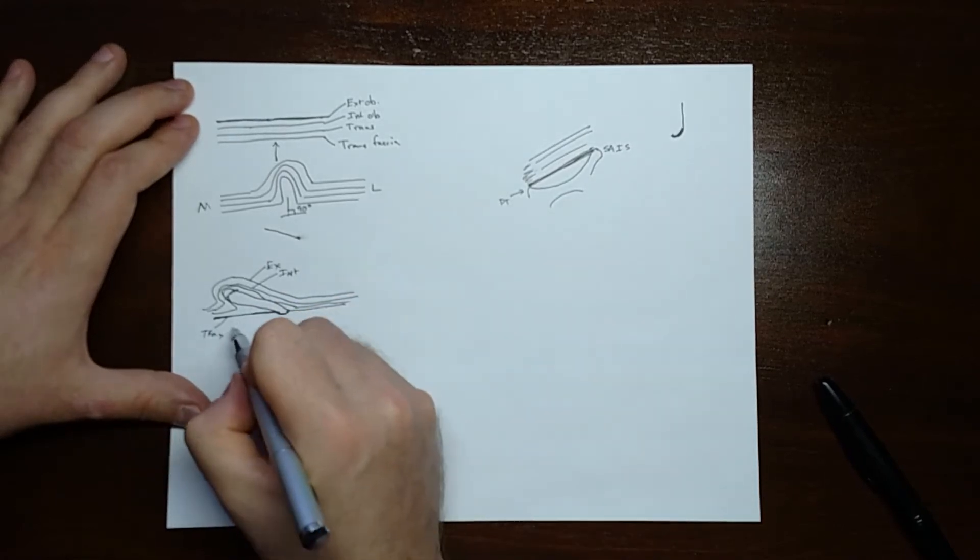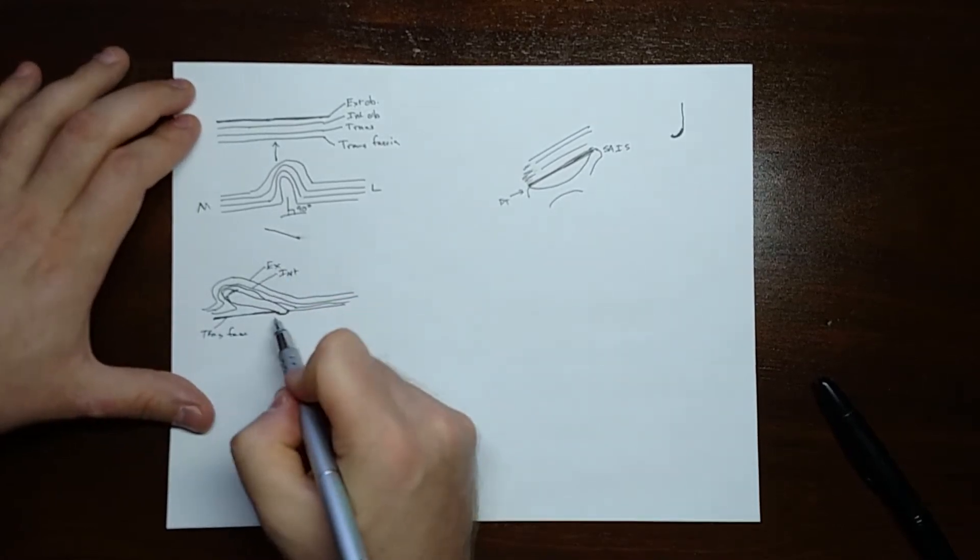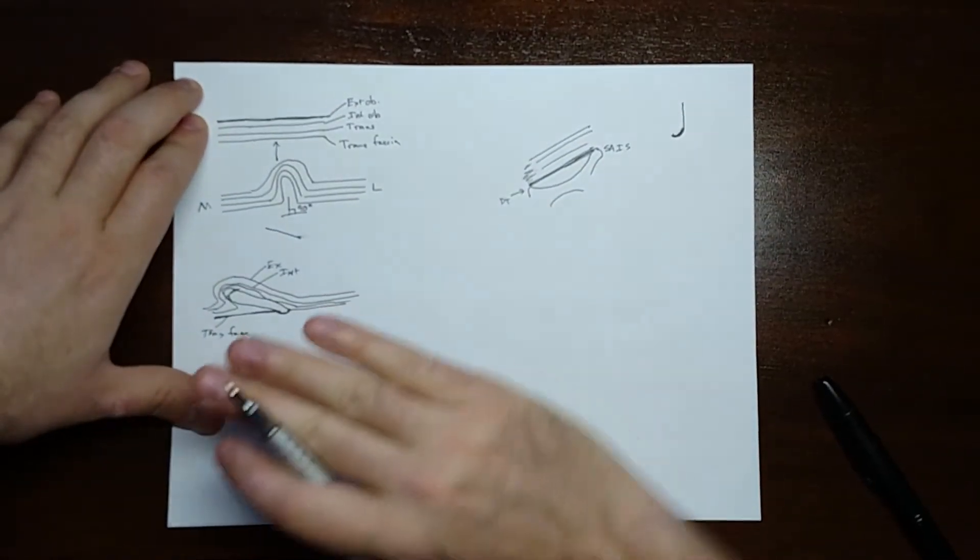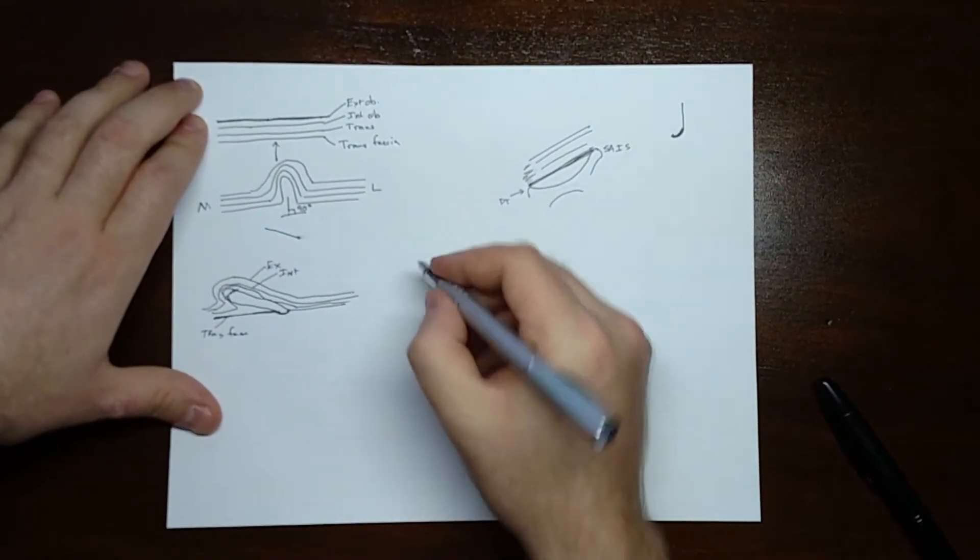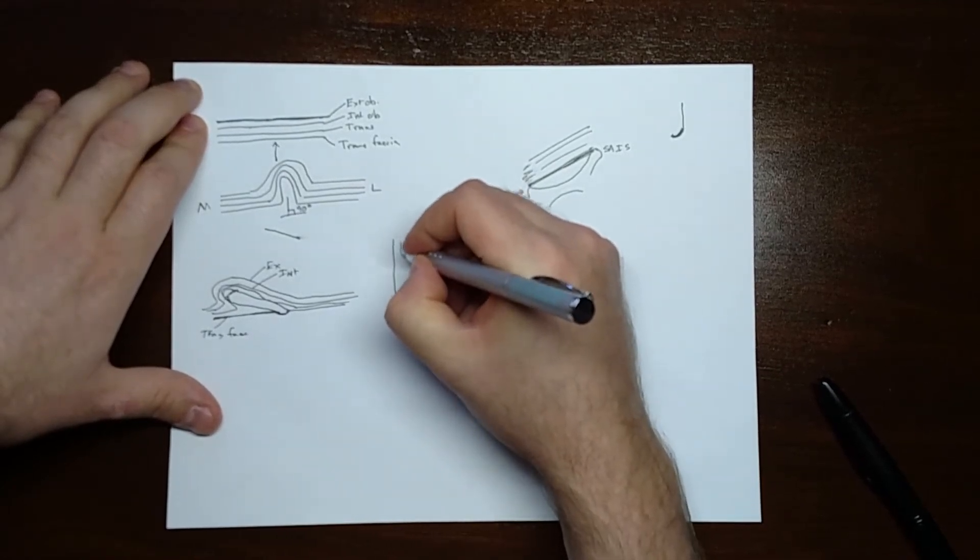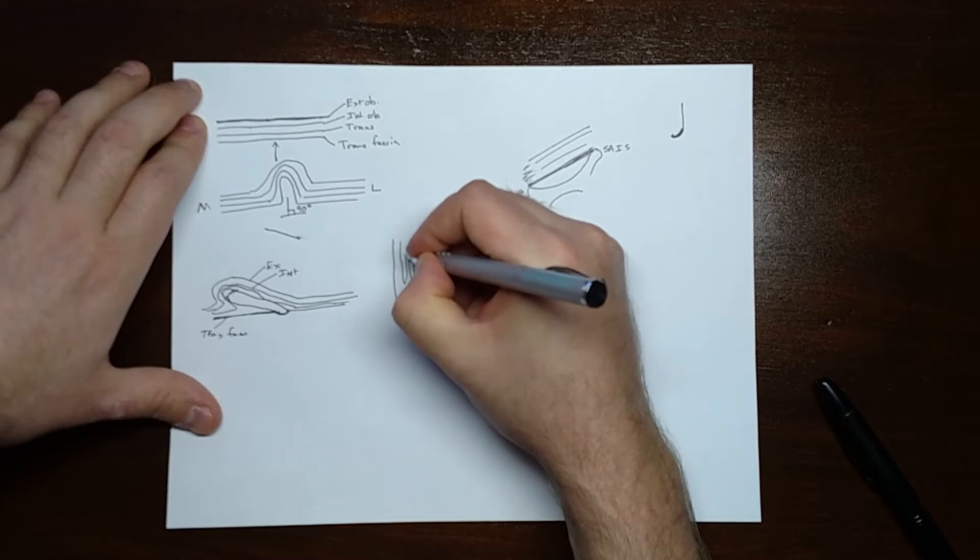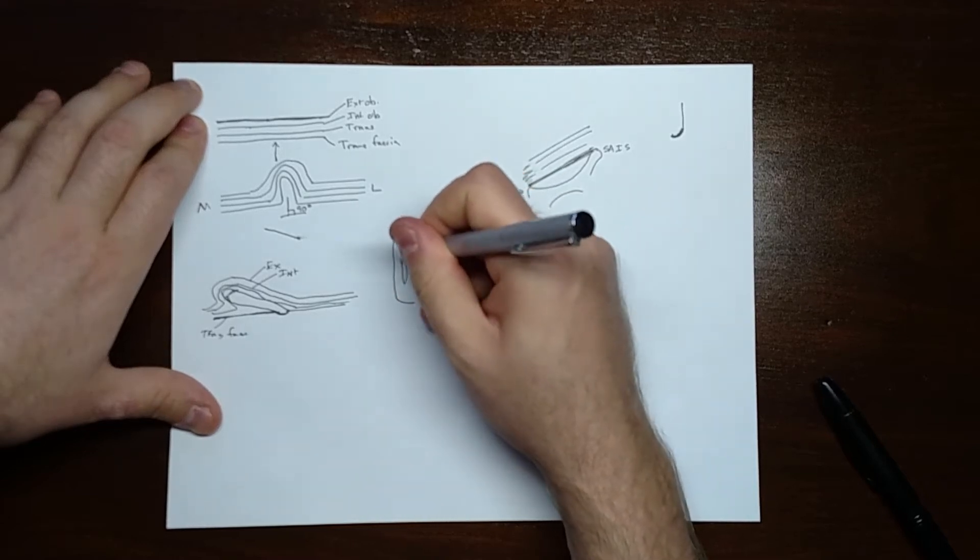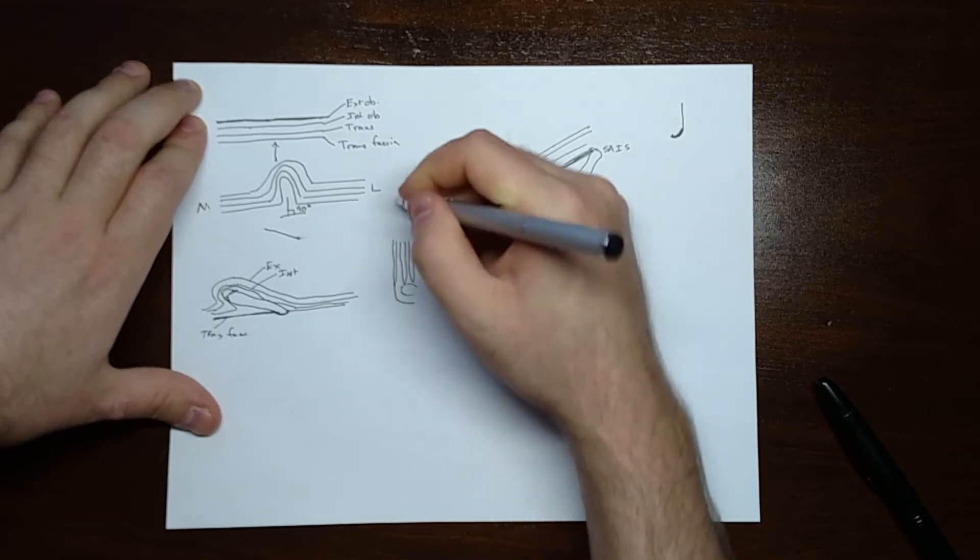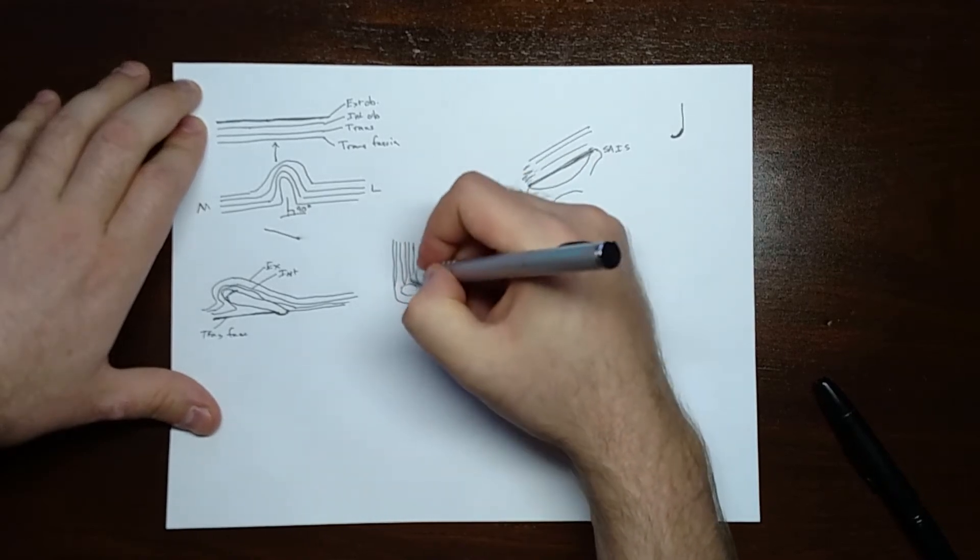That's the transversalis. The transversalis fascia becomes the posterior wall. And then, you have to flip your view 90 degrees to see that this would be the external oblique. And then, your two muscles, the internal oblique and the transversalis, become the roof.